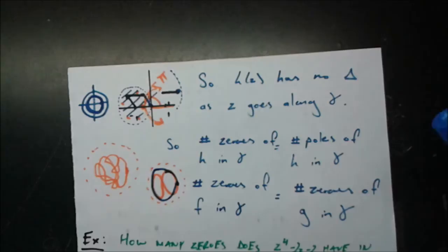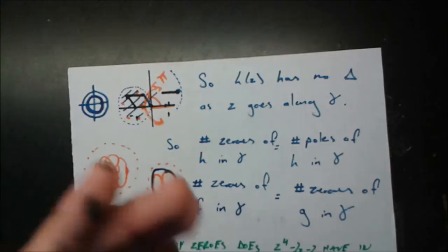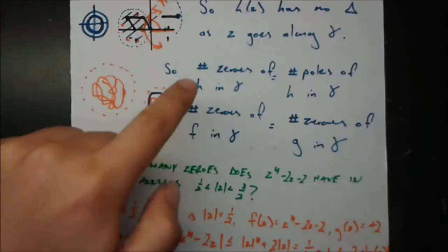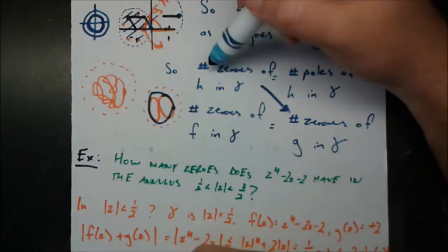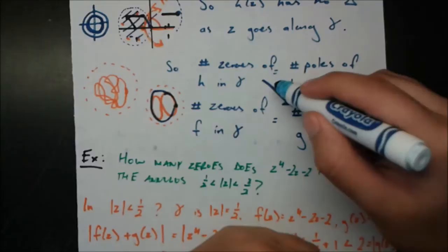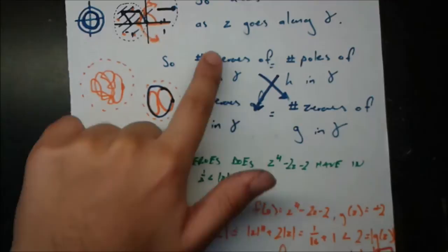That's very important because the argument principle tells us that the number of zeros of h minus the number of poles of h equals the net change in argument — and that net change is zero. So the number of zeros of h equals the number of poles of h. Since h = g/f, its zeros come from when g is zero, and its poles come from when f is zero. Therefore: number of zeros of h in gamma = number of zeros of g in gamma, and number of poles of h in gamma = number of zeros of f in gamma.